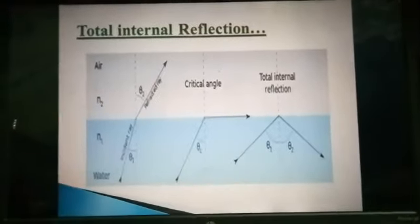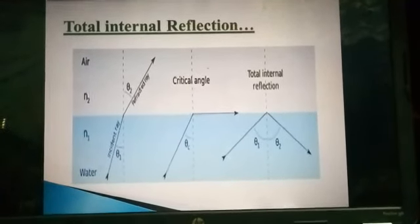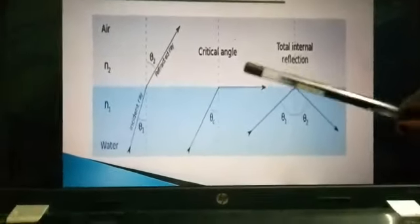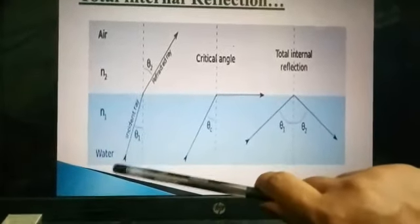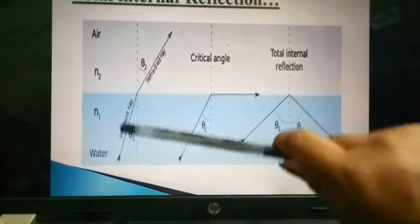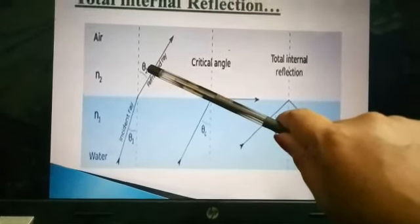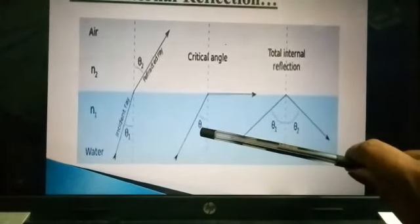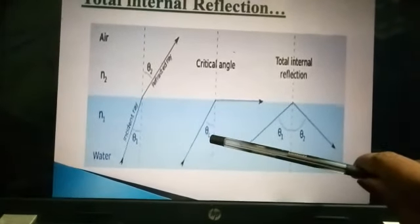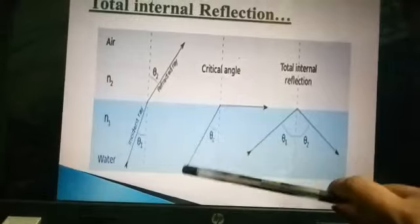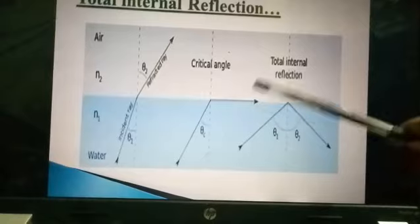Next is a new term — total internal reflection — not explicitly in your book but important to know. When the incident ray goes from water to air: at angle theta-1 there is normal refraction, at critical angle C the ray moves along the interface between air and water.